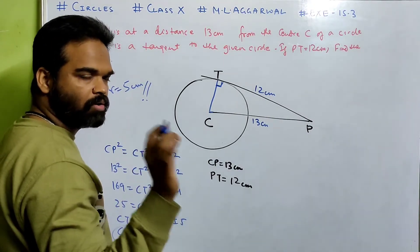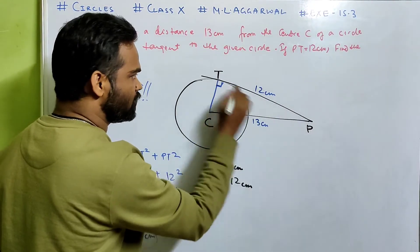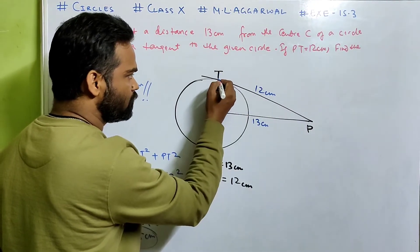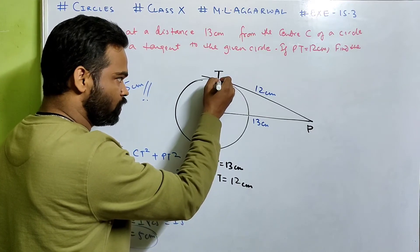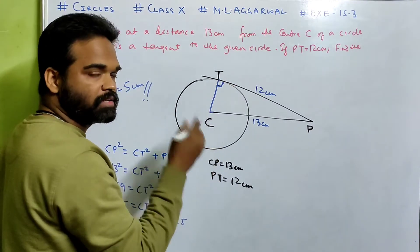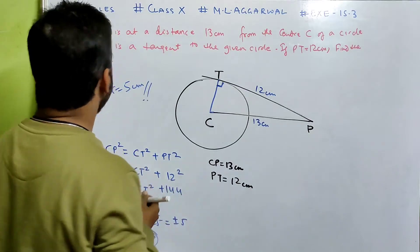Just one key piece of knowledge: if you draw a tangent at a point and from that point you draw a radius, then the radius and tangent are perpendicular to each other. Done.